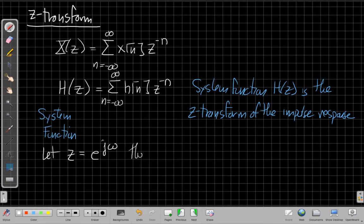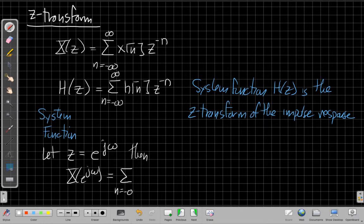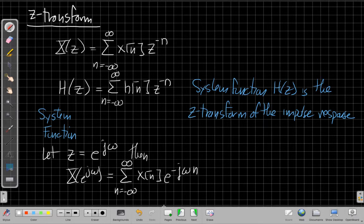Then what we get is the Fourier transform. I set z equal to e^(jω) and I still have the same sum as n goes from minus infinity to plus infinity, but then when I put z equal to e^(jω) here I end up with e^(-jωn) when I use properties of exponents - if I have e^(jω) to the minus n power, I can multiply the exponents.